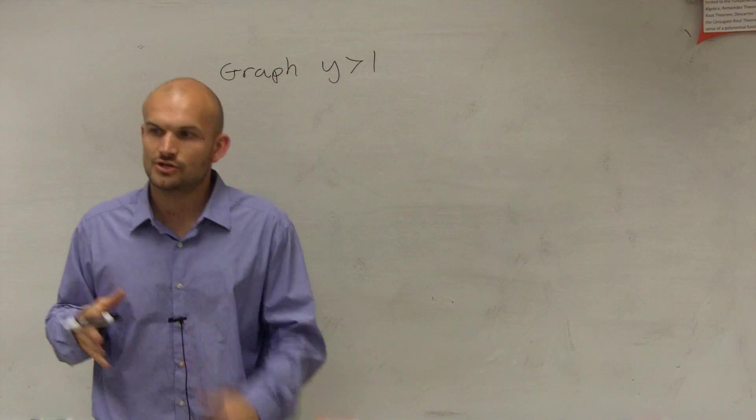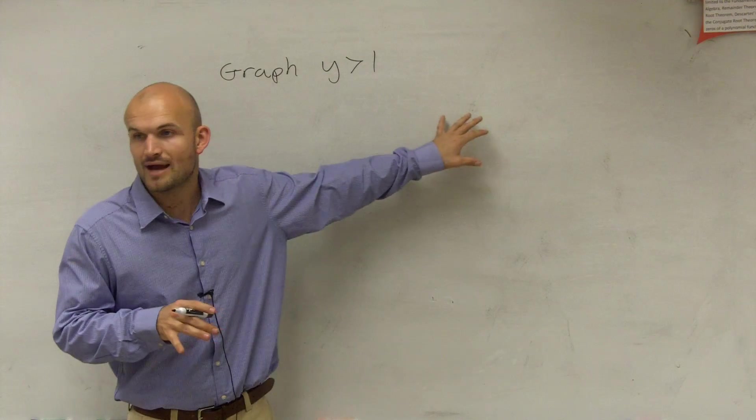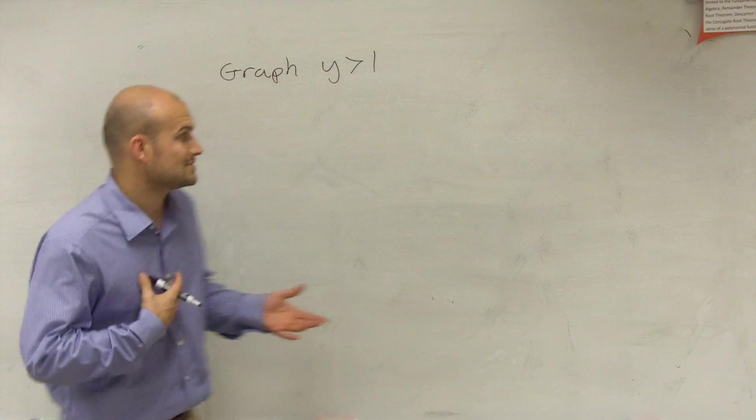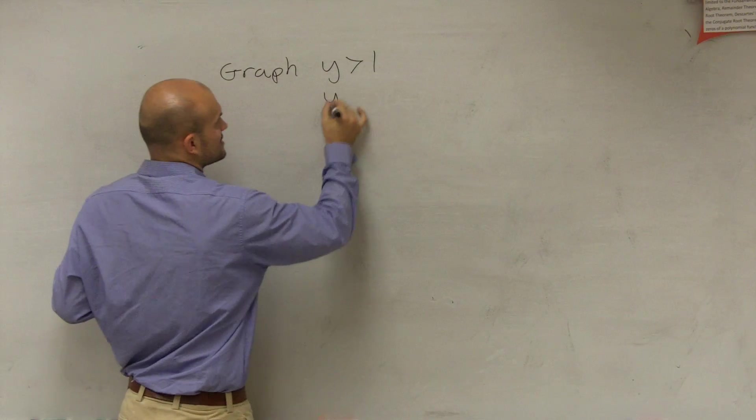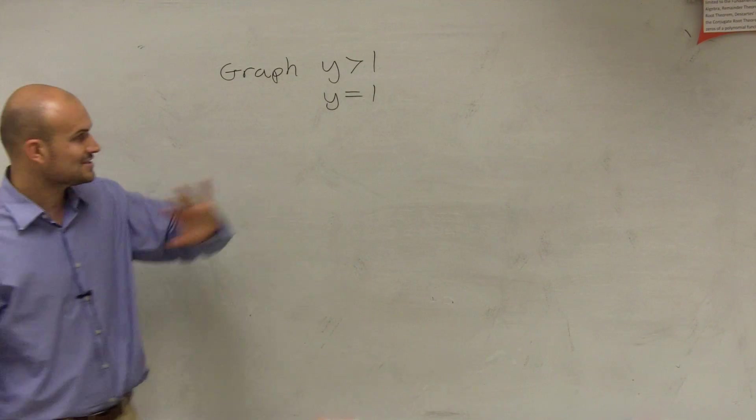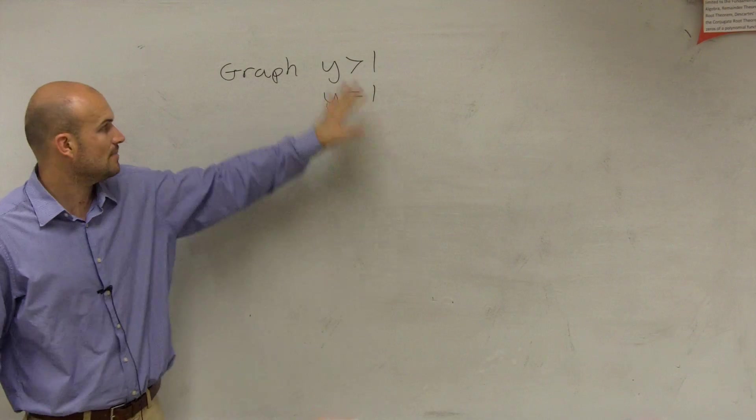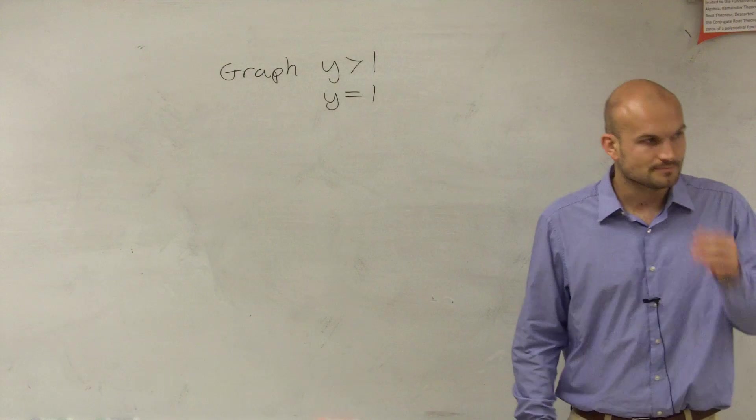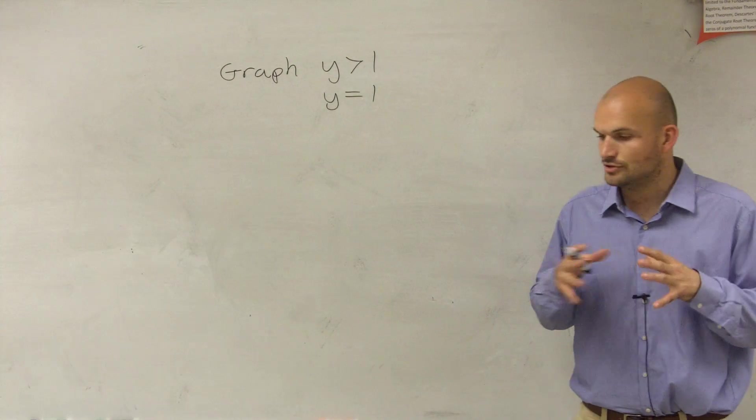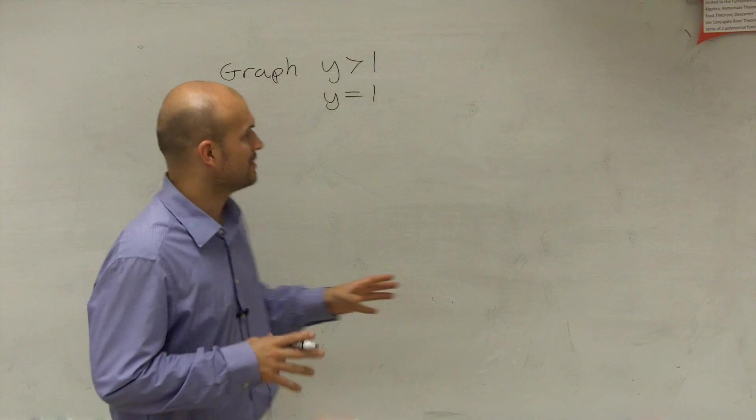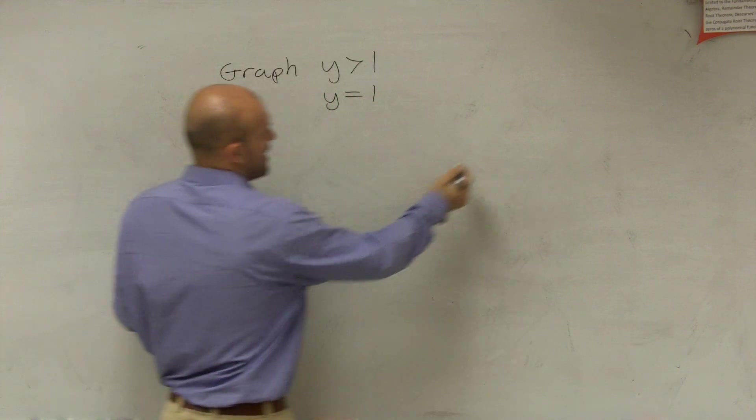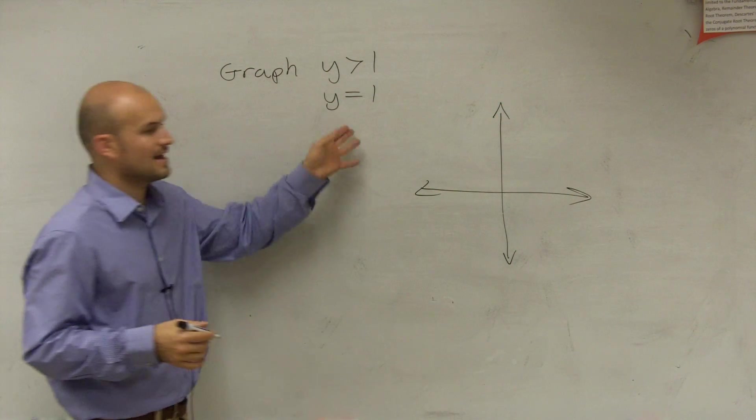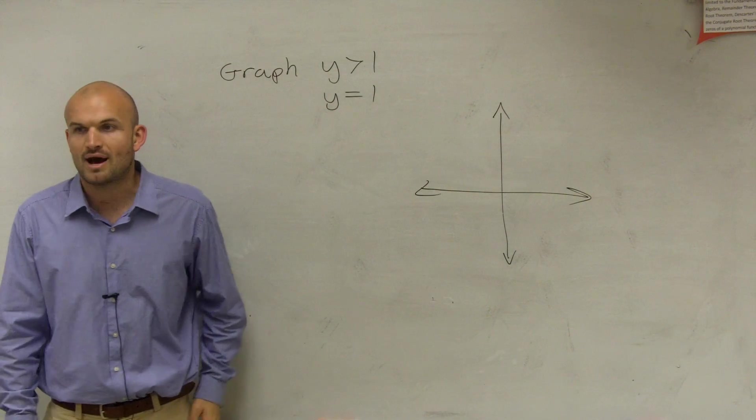So what we're going to do is when I show you how to graph this, what I want to do is we're going to go back to what we learned before on how to graph equations. So the first thing I want you guys to do is not to think of it as an inequality at all. Let's just graph y equals 1. Let's totally forget about the inequality sign. So hopefully you guys remember, how do we graph y equals 1? Yes, you can write a number line, but what I want to do is how I want to know how can I graph it on a Cartesian coordinate.